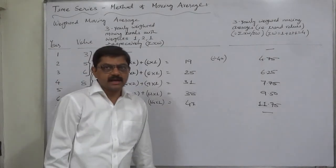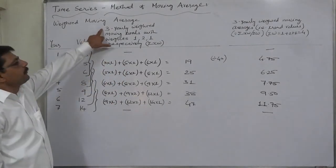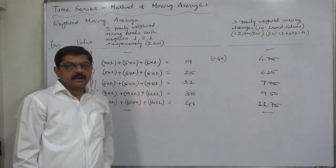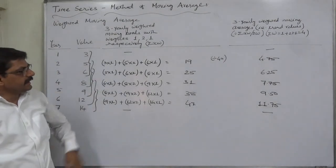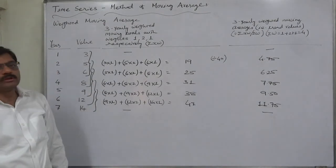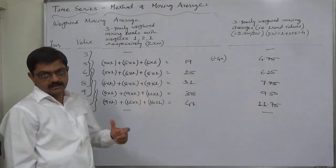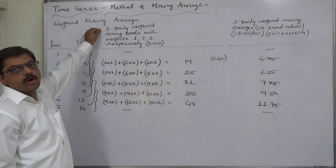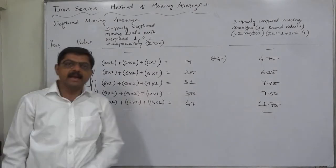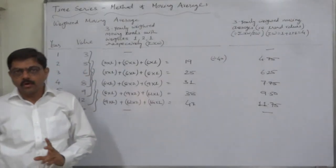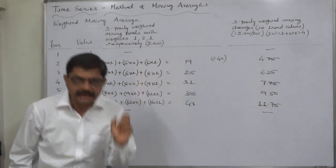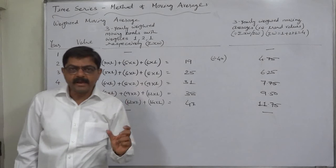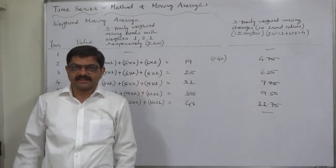In this way we can calculate the weighted moving average. Generally, it is not compulsory, but weighted moving averages are calculated with odd period of cycle: 3, 5, 7, etc. In the forthcoming lectures we are going to discuss comparison between weighted moving average for a specific odd period cycle and centered moving average of a specific even period cycle, and we shall compare the results. That will be interesting. Thank you.